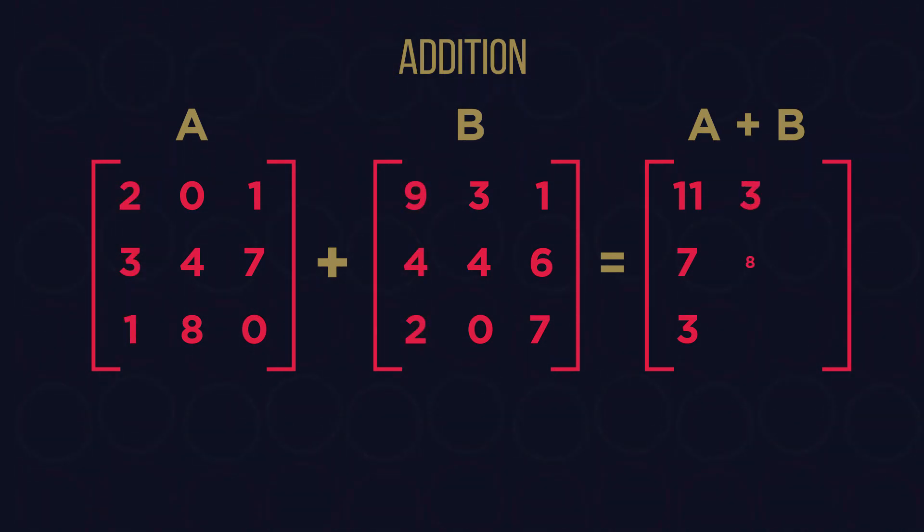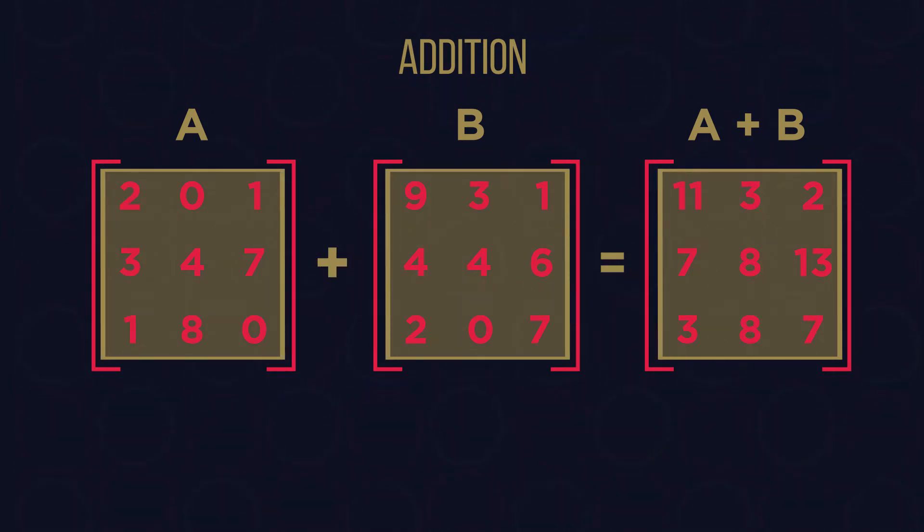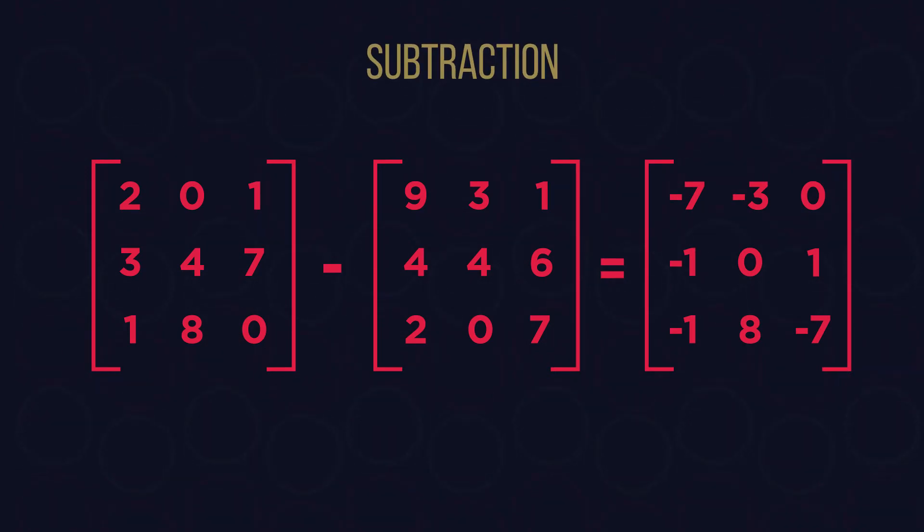Do the same until you have added together all the corresponding elements and place the results in their correct position in the result matrix. It's important to notice that the result matrix will have the same dimensions as the two starting ones, which means the same number of rows and columns. We can do the same with subtraction, only pay attention to the signs that the elements of the result matrix will have. Some might be negative.